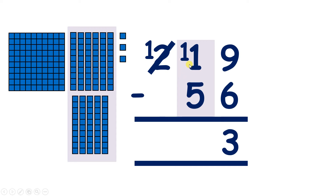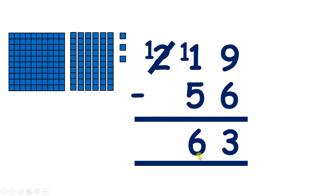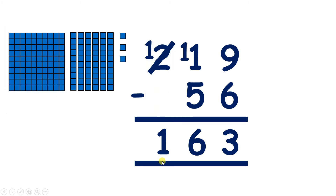So here we have 11 tens, and if we subtract 5 tens — taking away 1, 2, 3, 4, 5 — that leaves us with 6 tens. Now moving on to hundreds, we have 1 hundred and we aren't taking anything away, so 1 take away 0 is still 1. So our answer is 163.